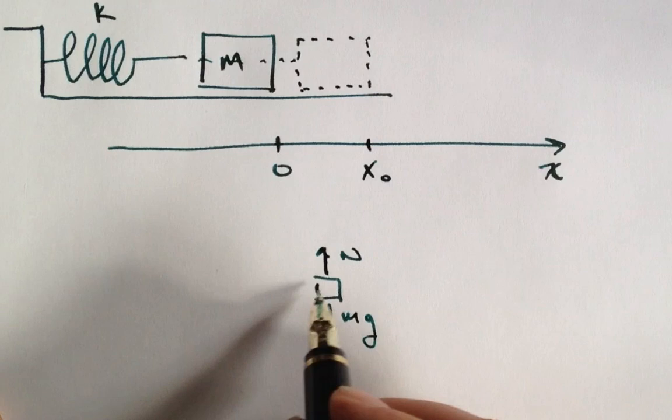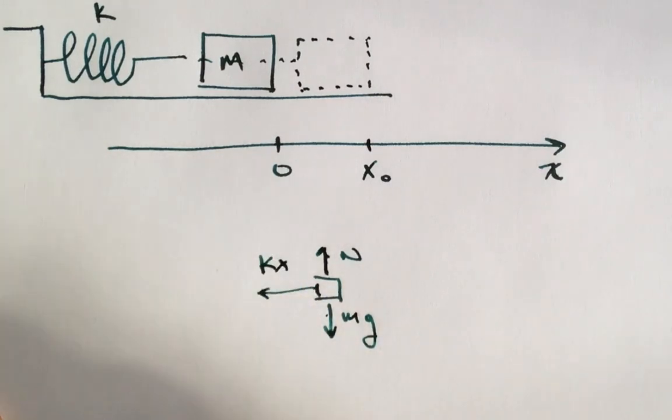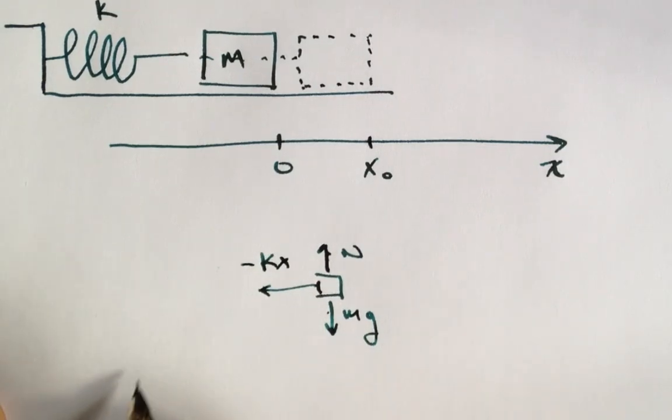Ordinarily, on my free body diagram, I indicate a force's direction graphically, and I just write the magnitude. But here, I remind myself of the minus sign that the spring's force is opposite the direction of the displacement.